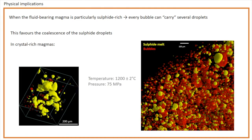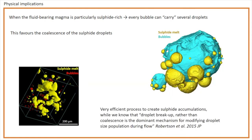In crystal-rich magmas, like those of our interaction experiments, drobbles rise more slowly due to the presence of crystals. We observe that both bubbles and sulfide droplets are deformed by the presence of crystals, but also in this case, as for crystal-poor magmas, we observe coalescence. Here you see on the left the shape of one of the largest sulfide blebs that clearly indicates multiple coalescence events. So in both decompression and interaction experiments, drobbles represent a very efficient way to create sulfide accumulations.